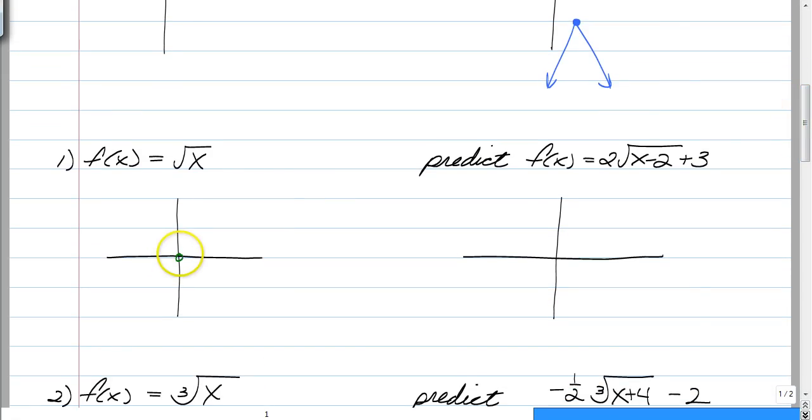Well, here's a square root of X graph. That's what the square root of X looks like. We know square roots are not negative, so that's why it's only on top. So if we were to predict what was going to happen with 2 times the square root of X minus 2 plus 3,